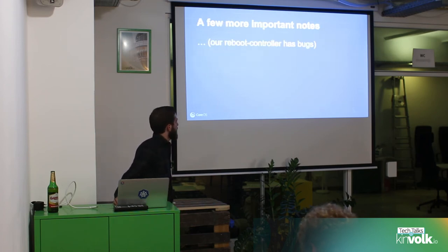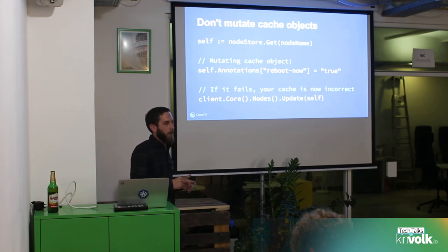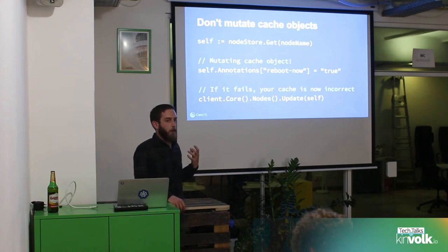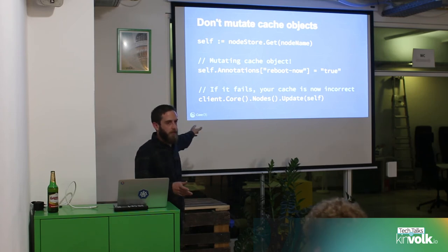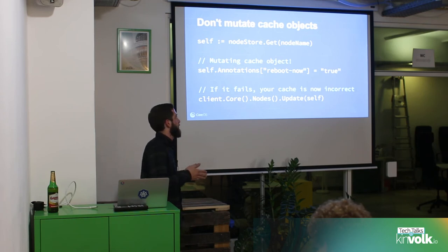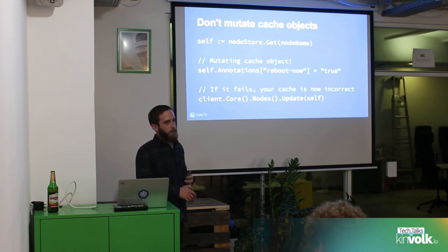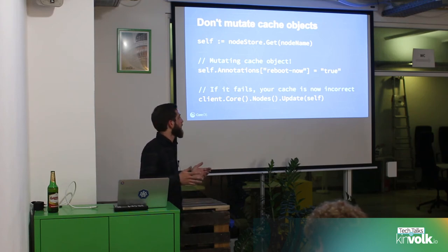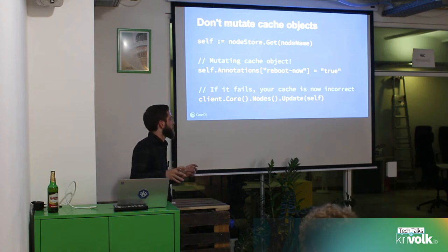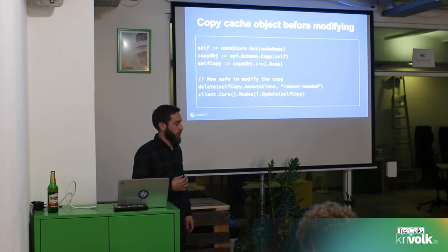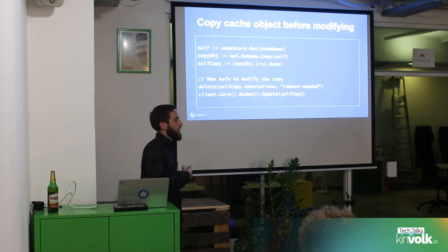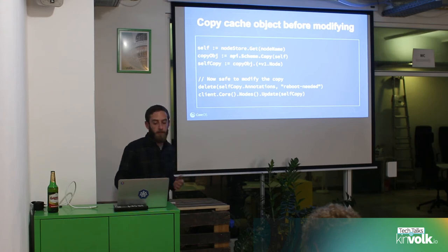Our reboot controller actually has a few bugs we introduced for brevity. One is that you shouldn't mutate cache objects. If you retrieve a node object from the store, change an annotation, and then the update call to the API fails due to a network outage, you've invalidated your cache — you've changed its state, and if you operate on it again before it gets updated, you may be making decisions based on bad data. Also, if multiple goroutines are using the cache simultaneously, you may invalidate it for others. The fix is simple: use api.scheme.copy — make a copy of the object first, make your changes, then safely try to update it in the API.